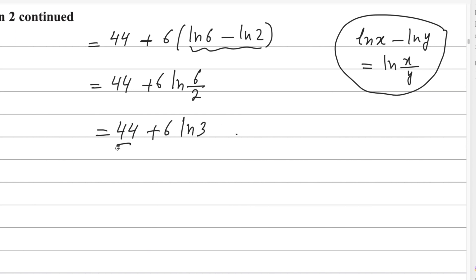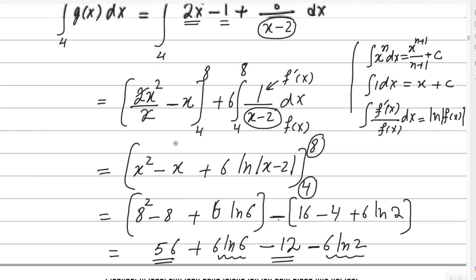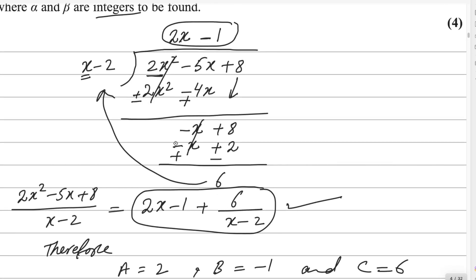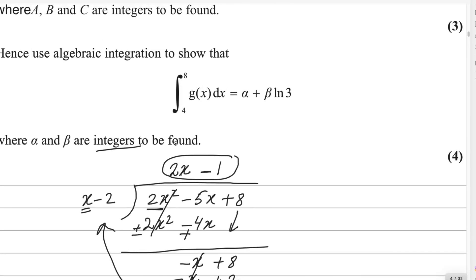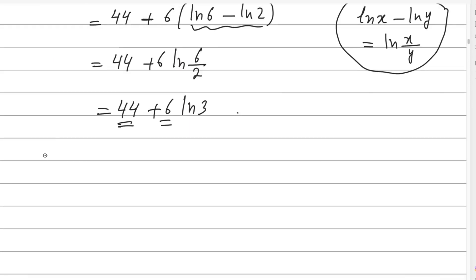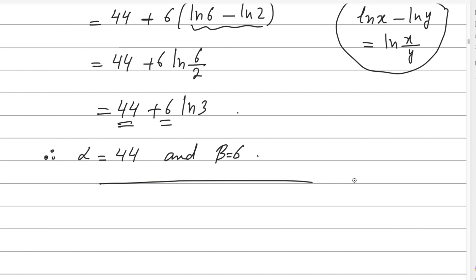Comparing this with the required form alpha plus beta log 3, we can now write the values: alpha equals 44 and beta equals 6. This is the answer for question number 2. If you have any questions, please write in the comment box. Thank you.